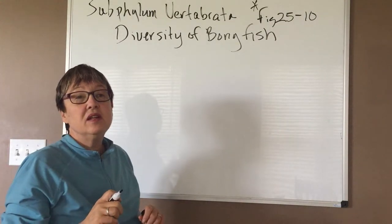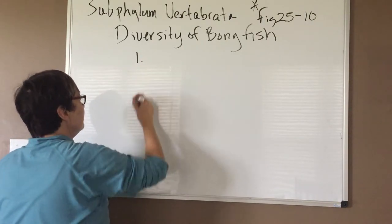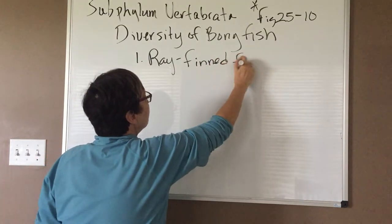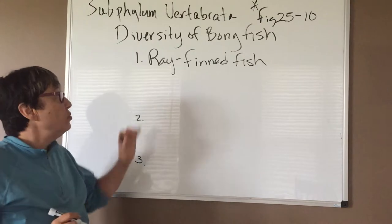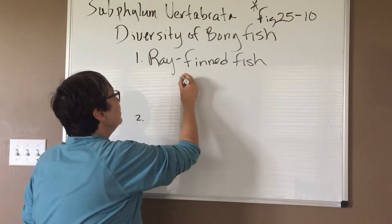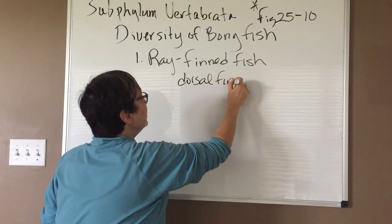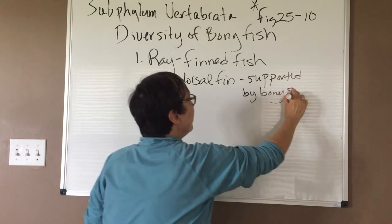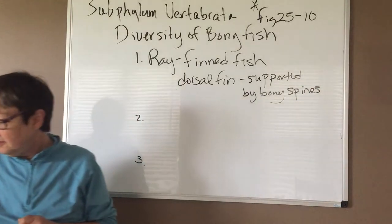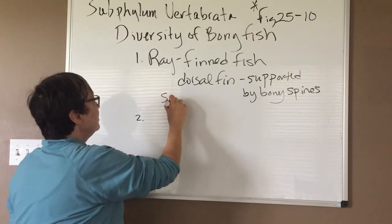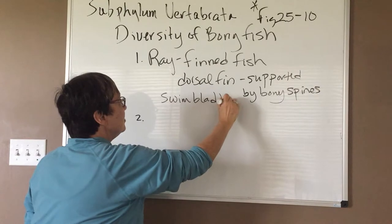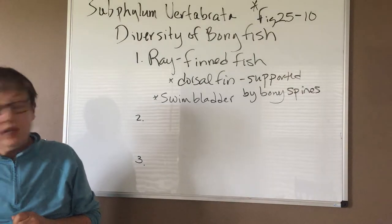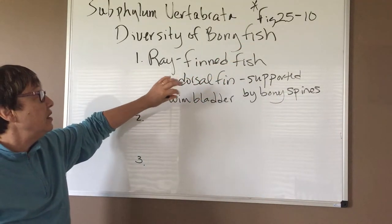I'm not going to use the technical terms. We've got three groups. The first are the ray-finned fish, which are most of the fish that you're familiar with. These are named because of the dorsal fin that is supported by bony spines or rays. In this group, the air sac acts as a swim bladder, as we've talked about before. Figure 25-10 is actually the anatomy for this group.